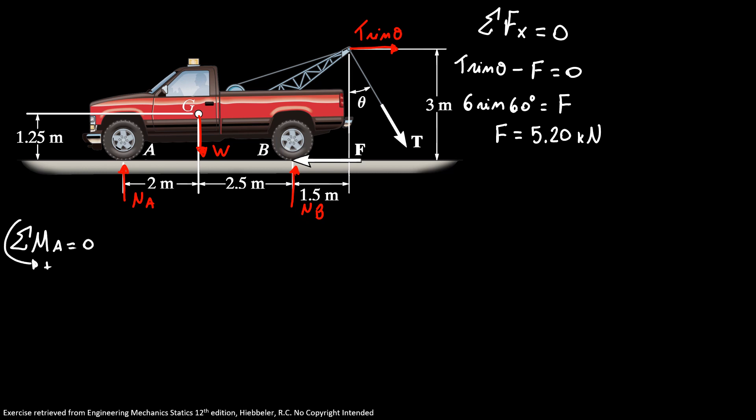So I'm going to start with my weight. So I have minus 2 times the weight, plus 4.5 times normal B, minus T cosine of 60 times 6, plus T sine of 60 times 3. That's my distance equals 0.